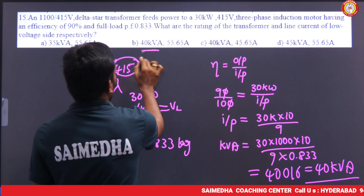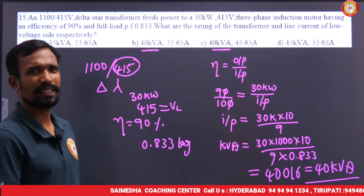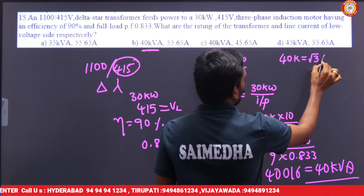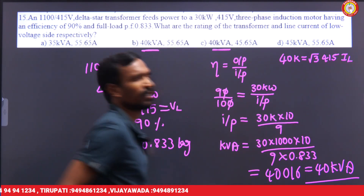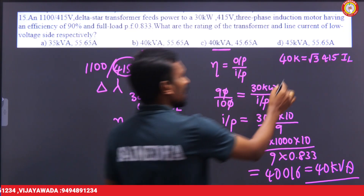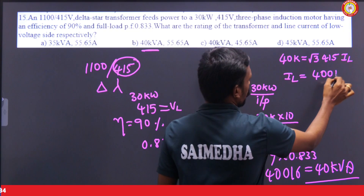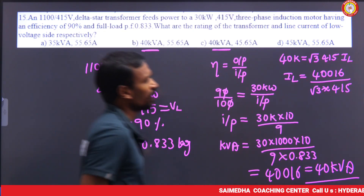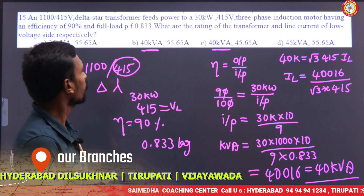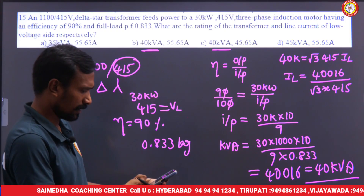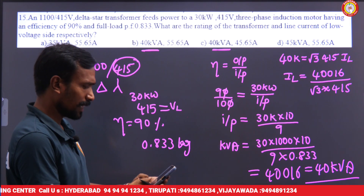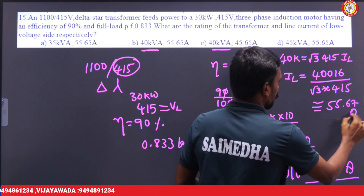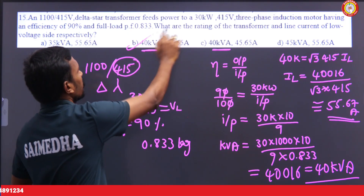40 KVA equals root 3 times VL times IL. VL is 415 volts. So IL equals 40,016 divided by root 3 into 415. Can you tell me — 45 or 55? Let's calculate: 40,016 divided by root 3 into 415 gives approximately 55.67 amperes.